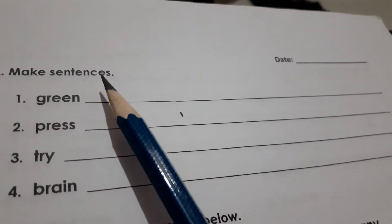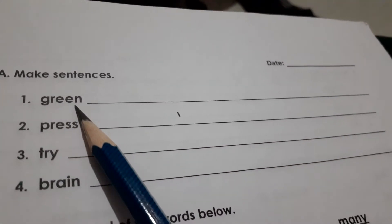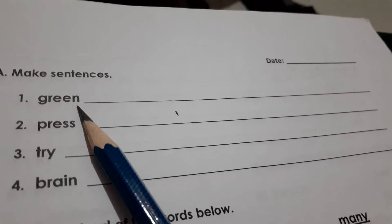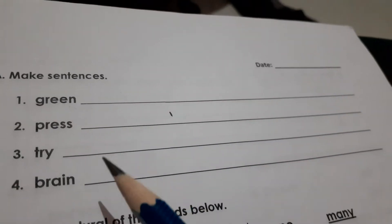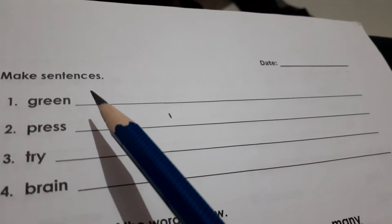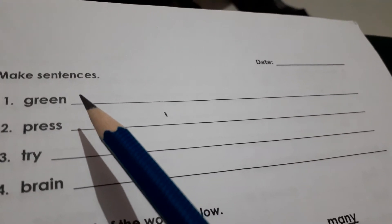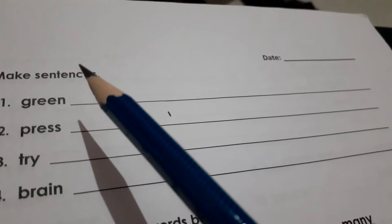Make sentences. Green. We must eat green vegetables. We can make any sentence of your own. You can write the color of leaves are green. Grass is green. So we will write here.